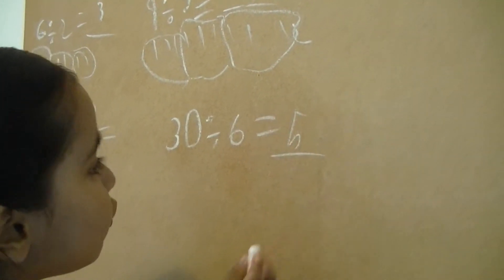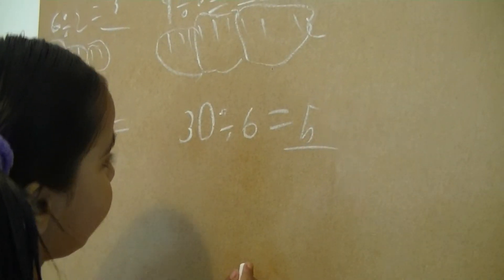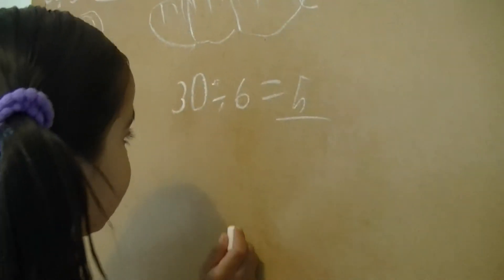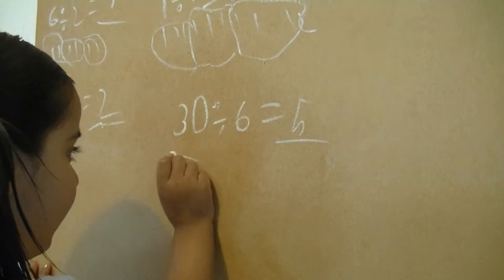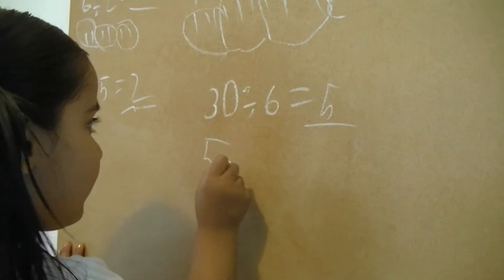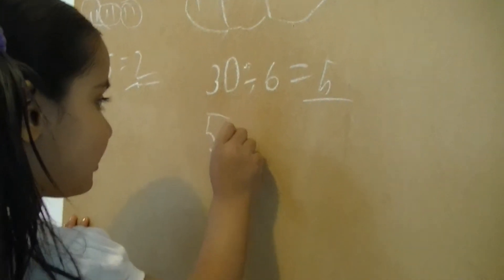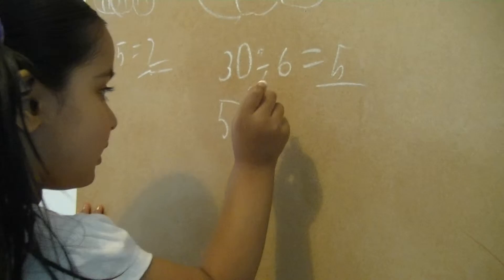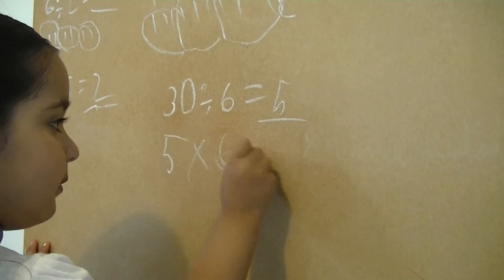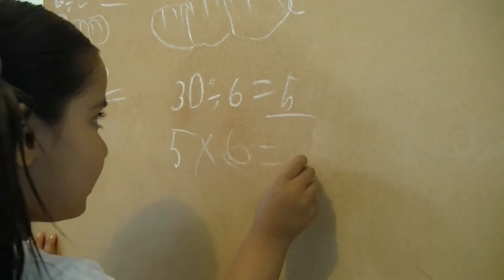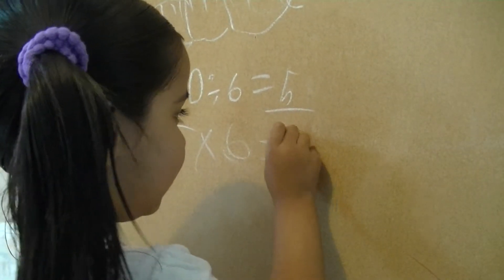How five? I can explain. Because five times six makes thirty.